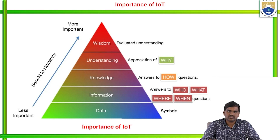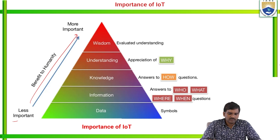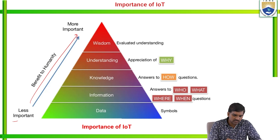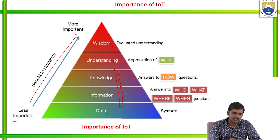This shows the importance of IoT, from less important to most important: data, information, knowledge, understanding and wisdom. Starting with data, based on information that is knowledge, that is understanding, and finally wisdom.